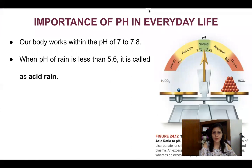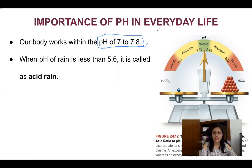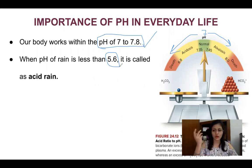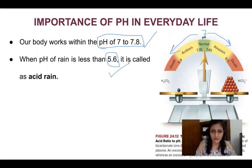Our body works in a specific pH range. Our organisms' body works in a pH range of 7 to 7.8, or more precisely, the normal pH is 7.3 to 7.45. When pH goes below or above this range, it becomes harmful for us. The acid range — when the pH becomes less than 7 — has a pH of 5.6, so remember the acid range is 5.6.